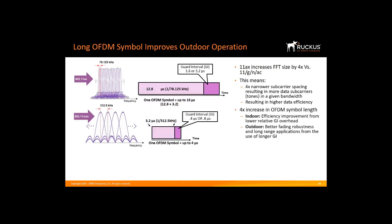In the time domain, this translates to a four times longer OFDM symbol. The data portion has been extended four-fold, from 3.2 microseconds to 12.8 microseconds, and the guard interval can be extended from 0.4 or 0.8 microseconds up to 3.2 microseconds. This allows us to cover both indoor and outdoor operation. For indoor operation, the OFDM symbol can still use a 0.4 or 0.8 microsecond guard interval, which gives us time domain efficiency due to the reduced guard interval overhead.